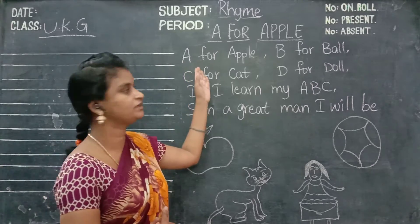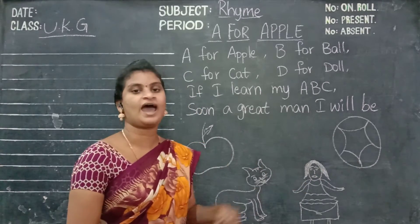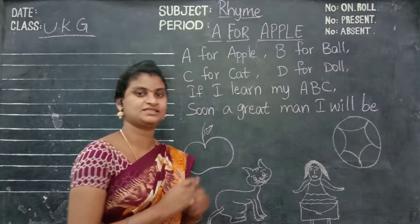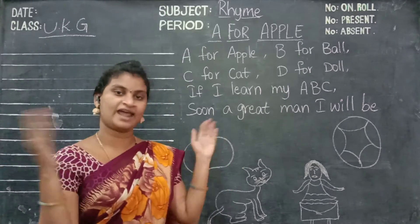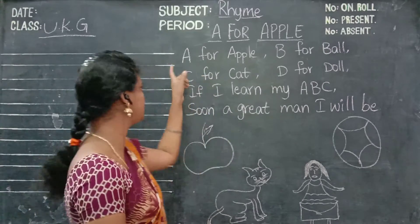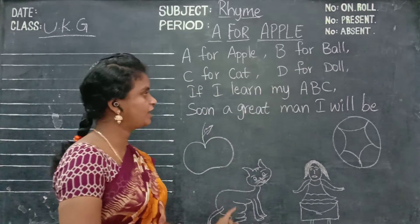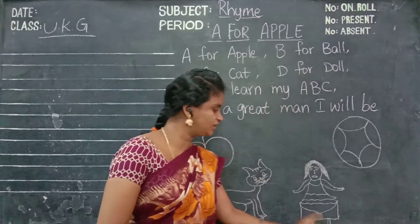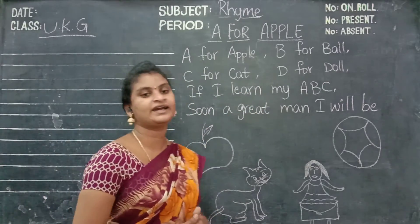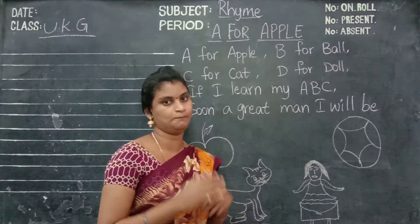Once again: A for apple, B for ball, C for cat, D for doll. If I learn my A, B, C, soon a great man I will be. See, look at the board. A for apple, B for ball, C for cat, D for doll. If I learn my A, B, C, soon a great man I will be.